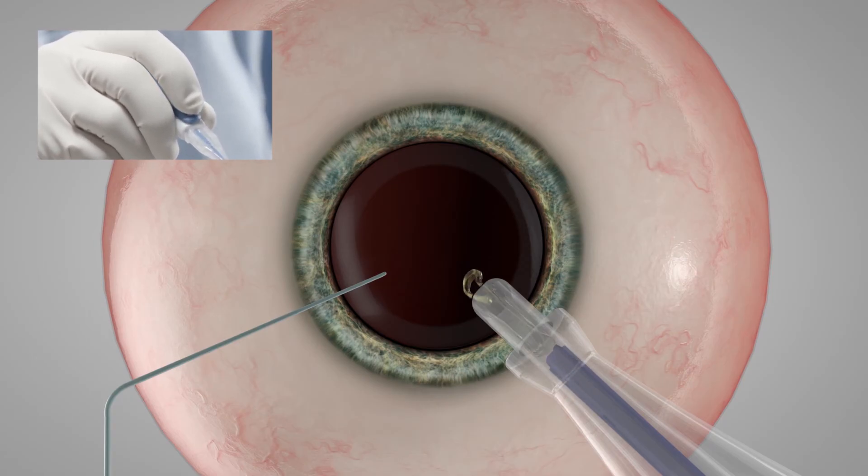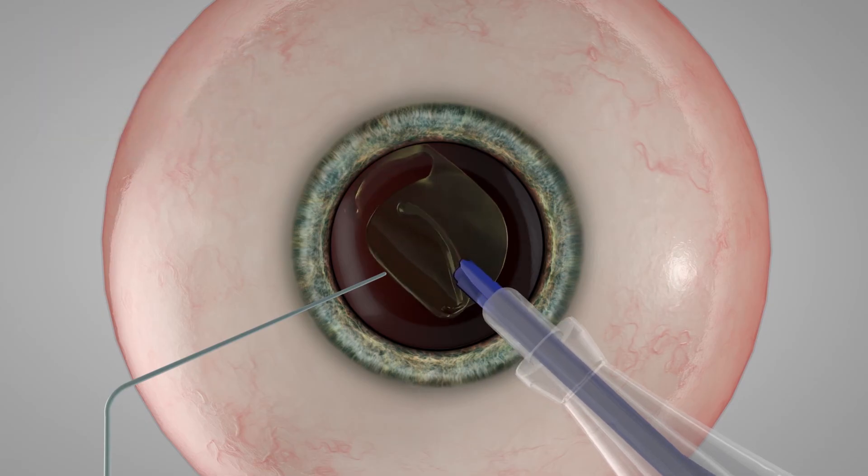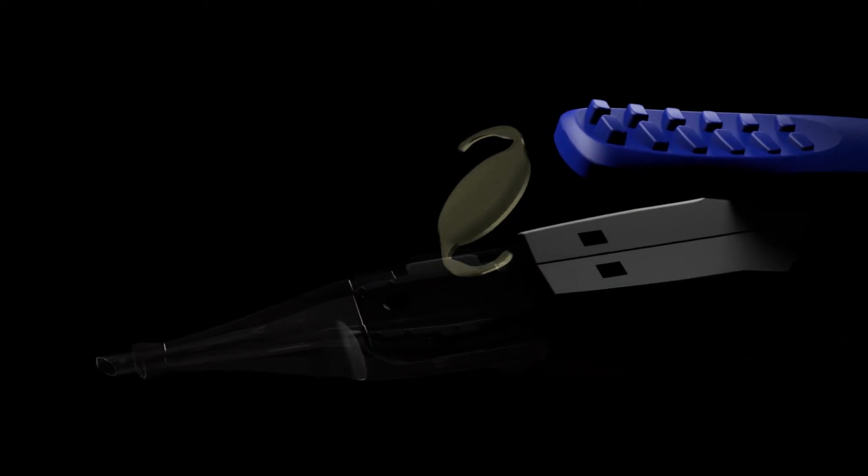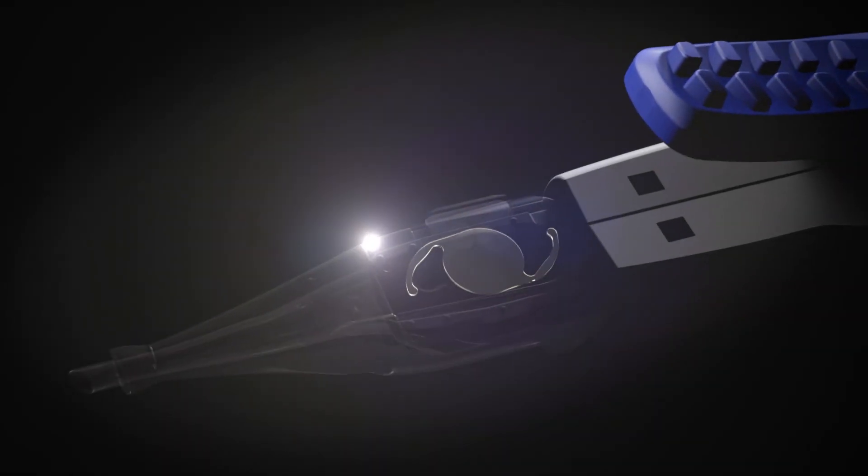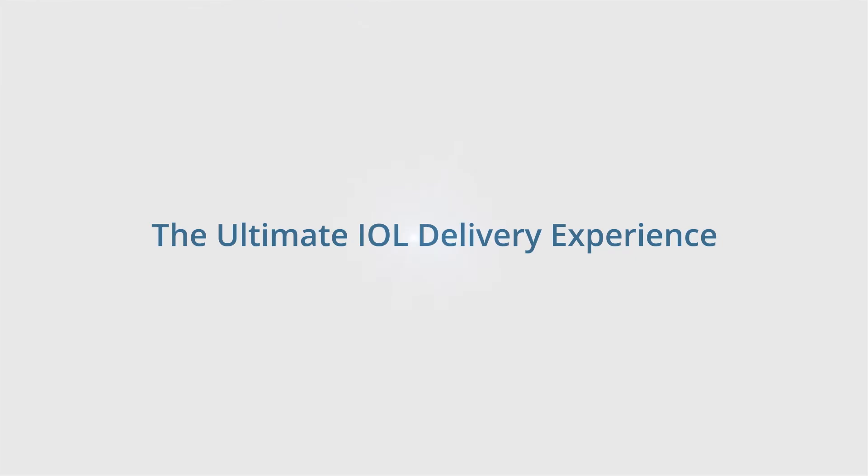Simply press the lever with your index finger to advance the plunger and deliver the IOL, ensuring that the leading haptic is properly placed within the eye as you implant the lens. It's that simple. So with your next cataract procedure, discover a new level of easy, intuitive control with Autonomy, the ultimate IOL delivery experience.